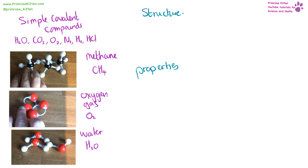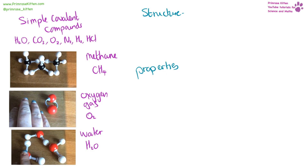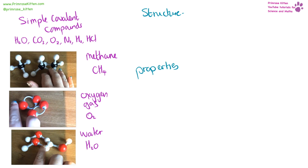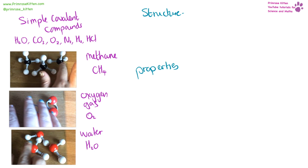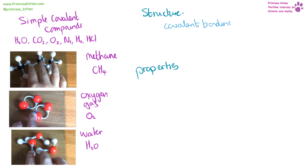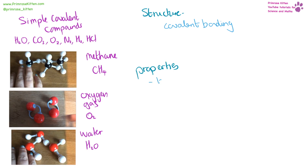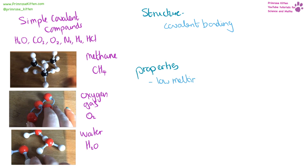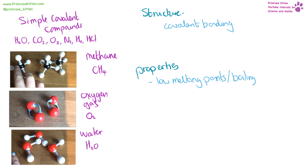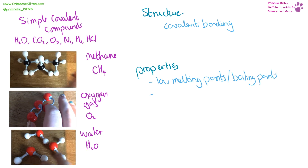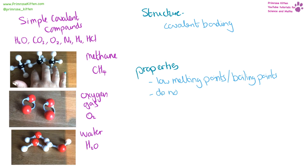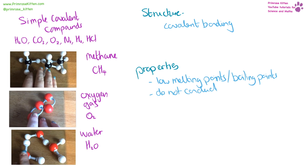For simple covalent compounds such as water, carbon dioxide, oxygen, nitrogen, hydrogen gas, hydrochloric acid, or methane, they are very, very small structures with covalent bonding. Their properties include low melting points and boiling points. They are generally a gas or liquid at room temperature. They do not conduct electricity.